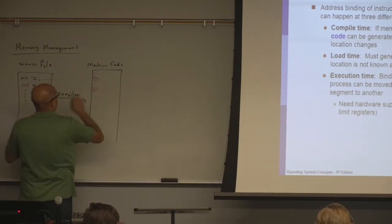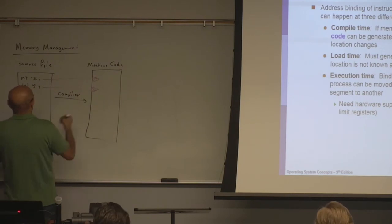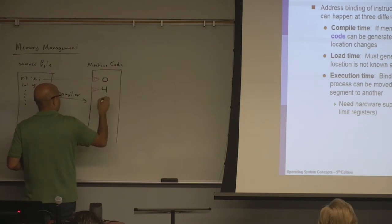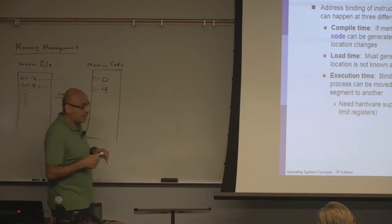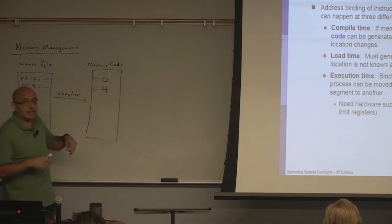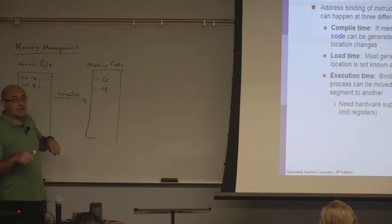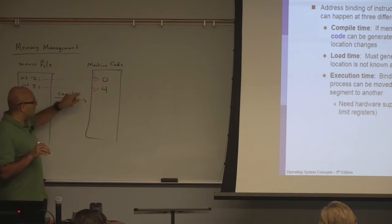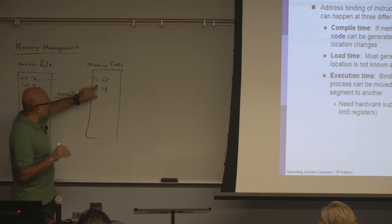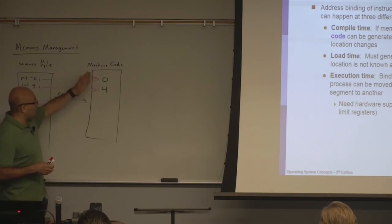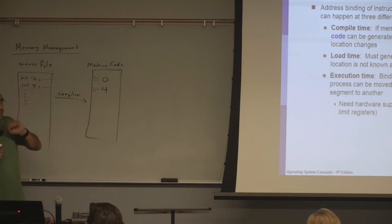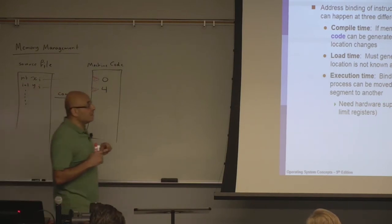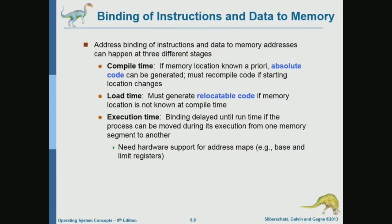With relocatable code, we have some offsets — like for X it's zero and for Y it's four. These are relative to the stack frame or the starting address for the stack frame. Think of relocatable code as consisting of offsets relative to some base address. This base address is either determined at load time or at execution time.